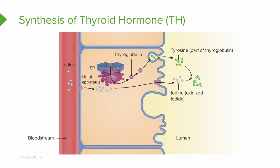Now in the form of iodine, it is attached to tyrosine molecules via peroxidase enzymes. This forms monoiodotyrosine (MIT), when one iodine attaches to a tyrosine, and diiodotyrosine (DIT), when two iodines attach. In the next step, these iodinated tyrosines link together to form either T3 or T4. One MIT plus one DIT linked together forms T3, since that is a total of three iodines.